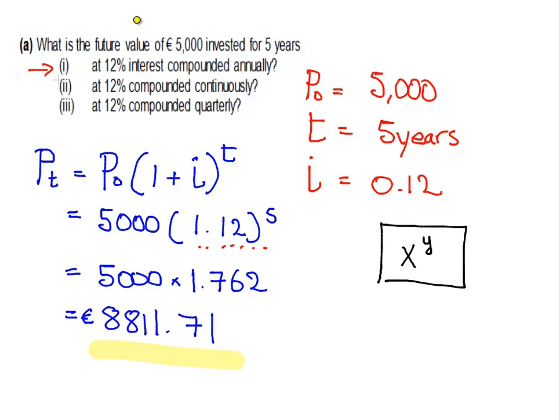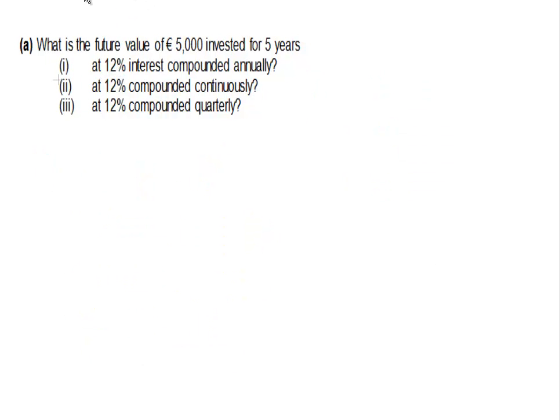Okay, so the next one is as follows. We're going to use all the same calculations again. But what we're going to do is we are going to compound continuously. So when we compound continuously, we use a different formula. And the formula here that we would use is pt, the future value, equals the current value, p0, times the exponential of i times t.